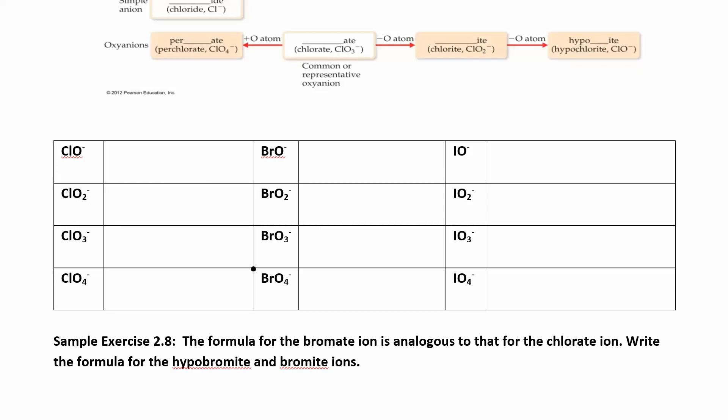So this guy right here, this is chlorate. This is the only one that I asked you to memorize in that list. Now, what would you guess BrO3 minus would be? It's bromate. Do you see it looks pretty similar. And then iodate is over here. That one's kind of hard to spell, or kind of hard to say. It feels wrong.